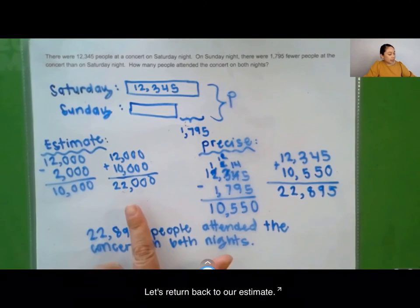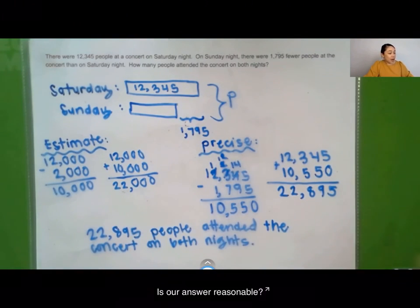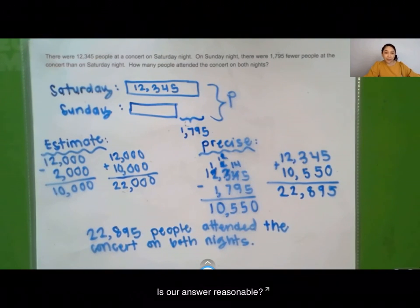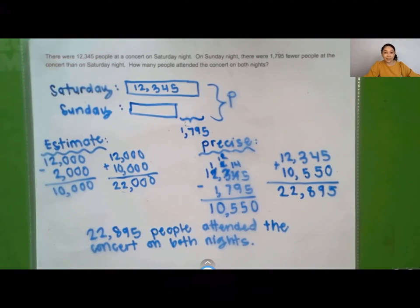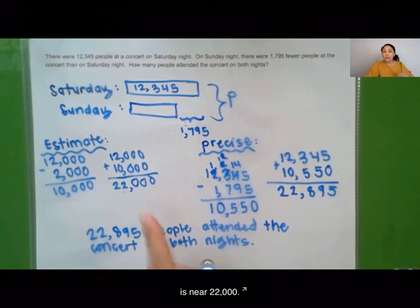Let's return to our estimate. Is our answer reasonable? Yes, it is, because 22,895 is near 22,000.